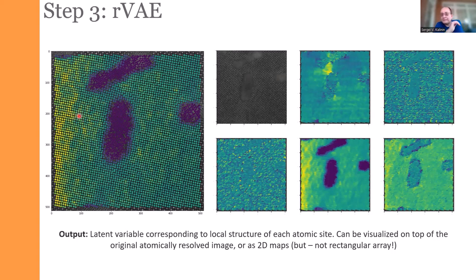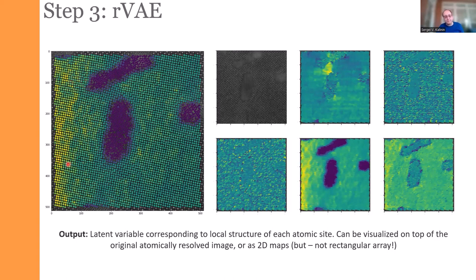The result: coloring each atom by its latent variable value, we immediately start to see meaningful structure. Some latent images show noise, but others show clear variability — for example, one phase here and another phase there. Some latent variables show smooth variations, such as gradually increasing toward the edge of the image, indicating a systematic physical trend that can be further investigated.